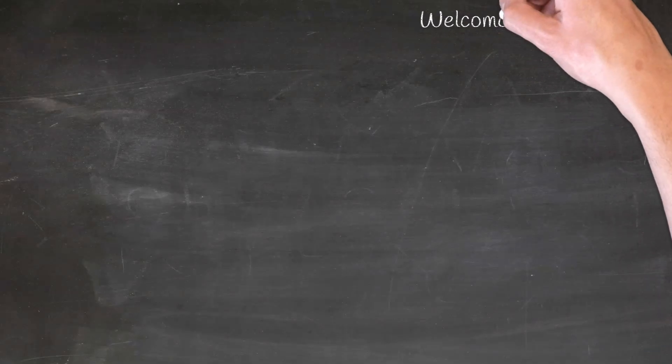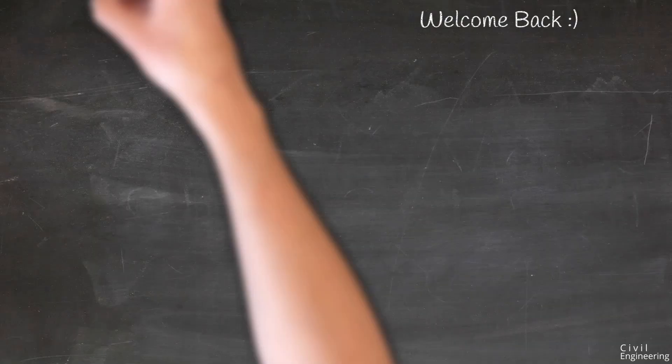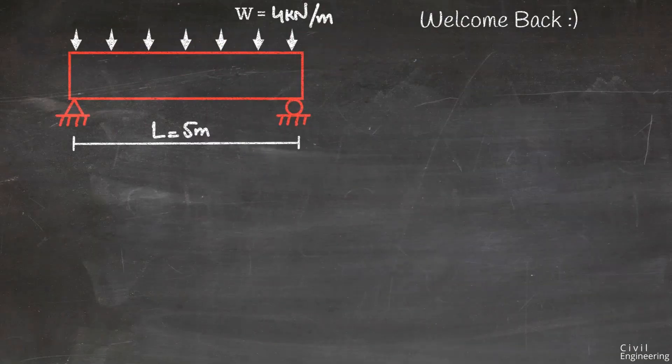Hello guys, welcome back to E7 Engineering YouTube channel. In today's lecture we are going to analyze a simply supported beam with a length of 5 meters and a uniformly distributed load of 4 kN per meter.